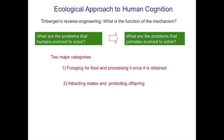There are really two main categories that both human and non-human primates have to solve. First, we have to forage for food and process it once it's obtained. As modern humans we don't think about it that way, but it wasn't that long ago that this was a day-to-day concern. And then the second thing, of course, is attracting mates and protecting your offspring — finding somebody to have a family with and protecting that family is a big challenge that everyone who is human deals with.